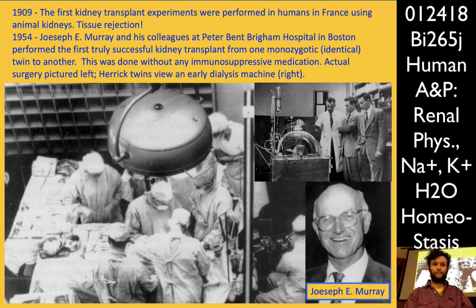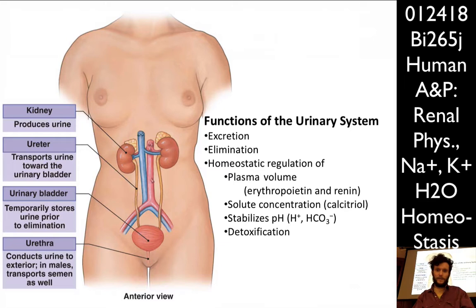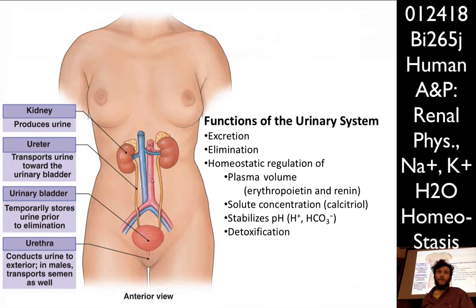So that's all the history. Some of the functions of the urinary system — obviously it's for excretion, the excretion of different waste products. That's the principal purpose of the urinary system. And then there's storage and elimination of fluid waste — storage in the bladder and eventual elimination.